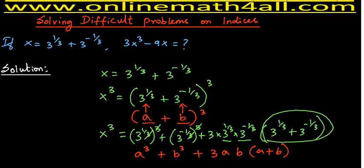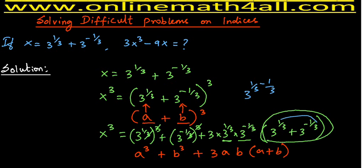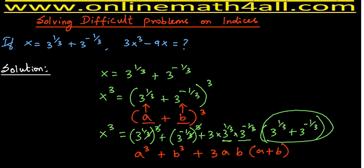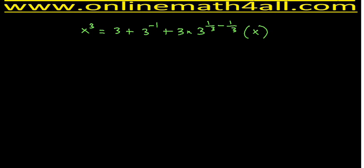On the next page: x³ equals 3 plus 3^(-1), which can be written as 1/3, plus 3 times 3 to the power 0 times x. Since anything to the power 0 is 1, we have 3 times 1 equals 3, so 3 times x equals 3x. Therefore x³ equals 3 + 1/3 + 3x.